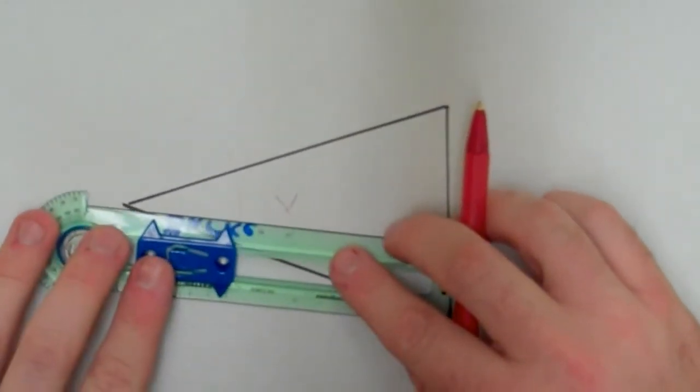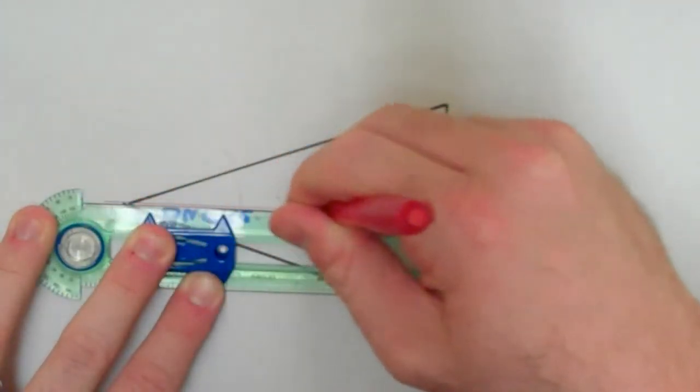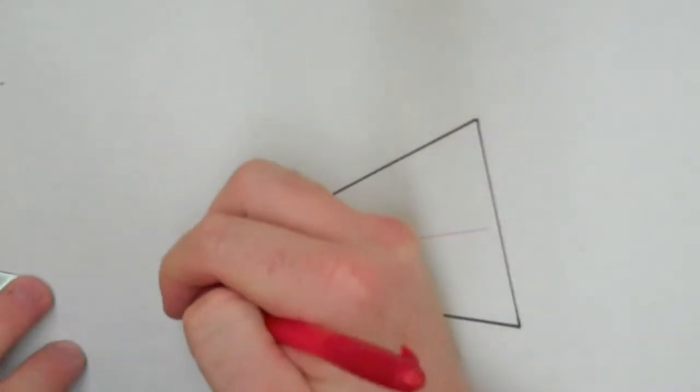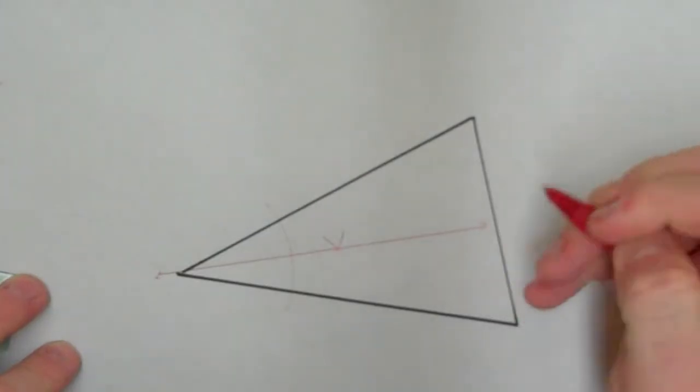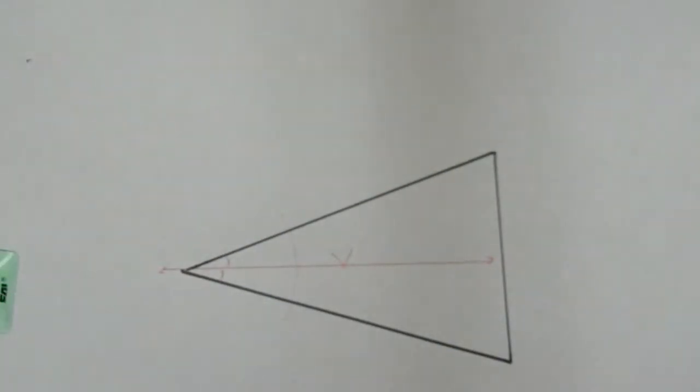And now, if I connect the vertex of the angle and this intersection point, I should get a nice angle bisector. So now, basically what I know is that this angle is now congruent to this angle right here. That's the definition of an angle bisector.